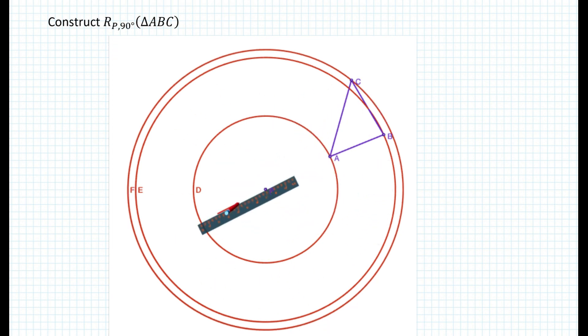So that means that the triangle cannot be constructed anywhere along the circle. So in order to make a perpendicular because we want to rotate the triangle by 90 degrees counterclockwise, we are going to construct a perpendicular to line L through point P.